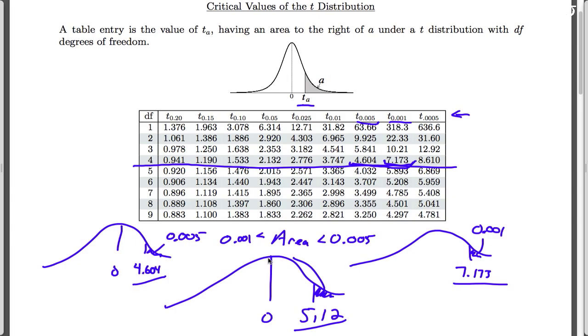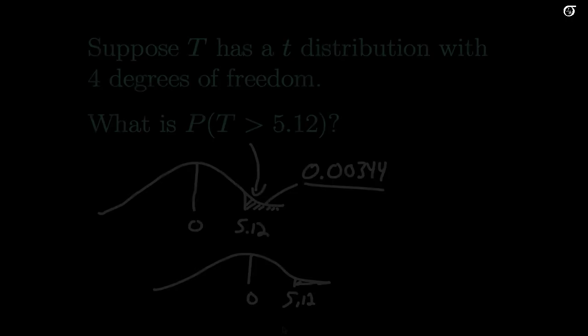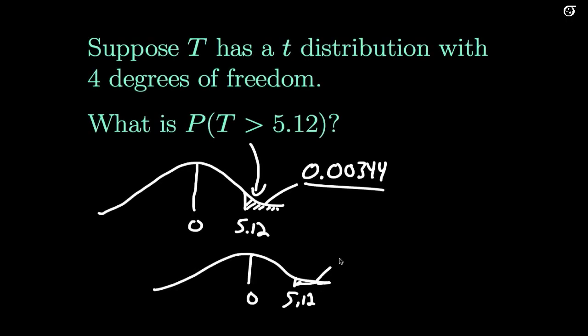And that's really the best we can do without a computer. So what we found is that our area has to be less than 0.005 and greater than 0.001 by the table. Now if we had the computer and we found this value, we wouldn't have had to go to the table, but you might notice that this value is at least consistent with the range that we found from the table.